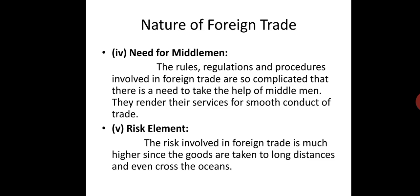Fifth is the risk element. The risk involved in foreign trade is much higher since goods are transported over long distances and even across oceans. When importing from America to India, for example, there are risks of accidents, illegal transactions happening with your goods, or goods being involved in illegal work by middlemen or other parties even without your intention. There is also the risk that goods may not pass the different duties, rules, and regulations of other countries, or that specific goods may be banned from import or export in certain countries.